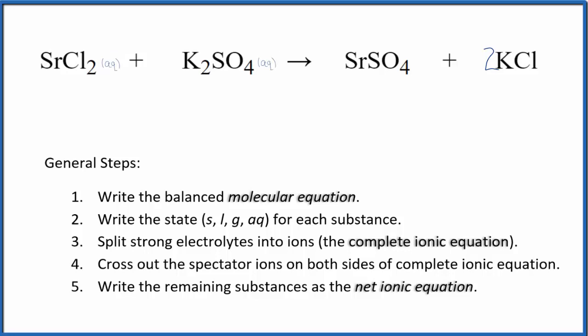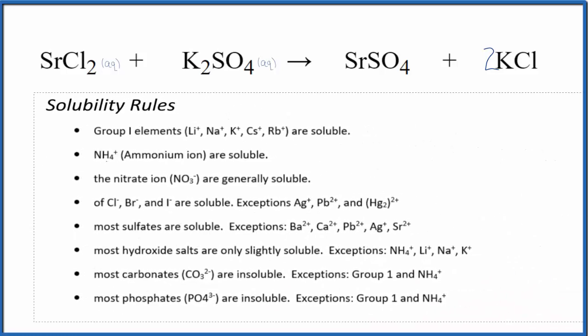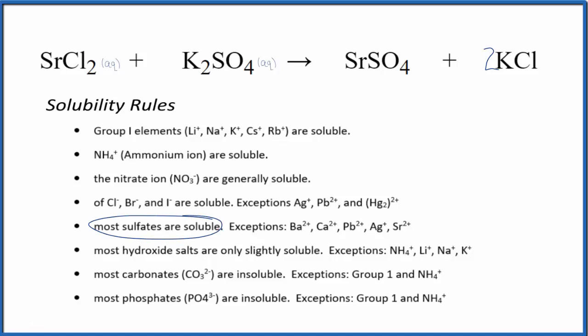Let's look at the solubility rules real quick. So we find the sulfates. In general, sulfates are soluble. They'll dissolve in water. They'll be aqueous with some exceptions. And here is strontium. That's one of our exceptions. So we're going to put an S for strontium sulfate. It's going to be a solid. These will react. They'll form the solid. It'll be a precipitate. It'll fall to the bottom of the test tube as a precipitate. So that's our strontium sulfate.